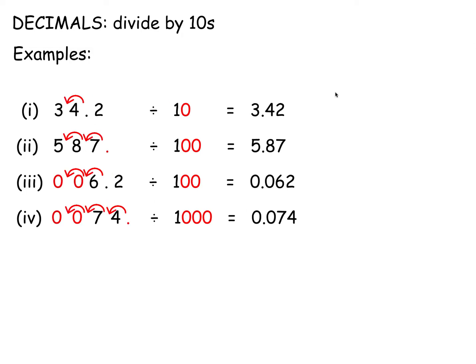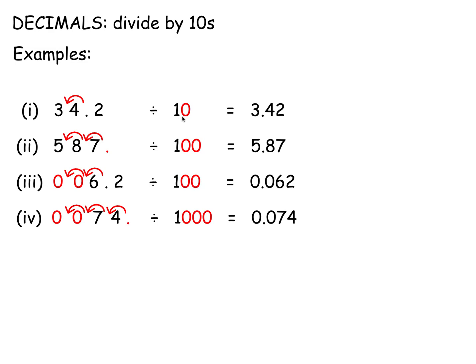The same applies in division. Divide by 10, shift the decimal point one place — in this case, to the left. For 100, shift two places; for 1,000, three places. If you run out of figures, put in zeros. For example, 74 — you should know the decimal point goes after the units. That's multiplying and dividing by multiples of 10.